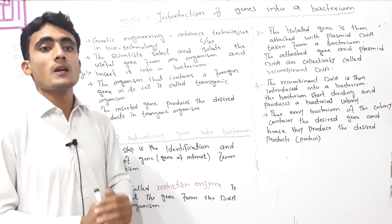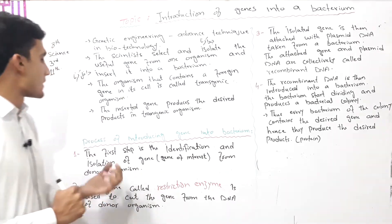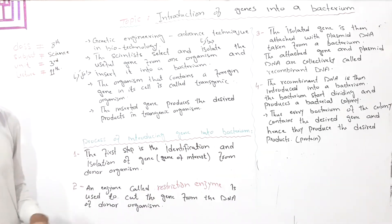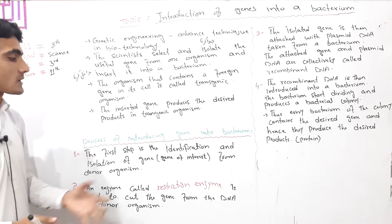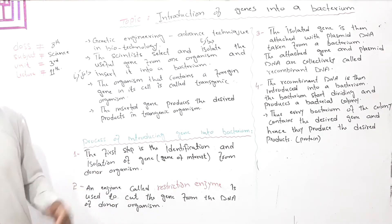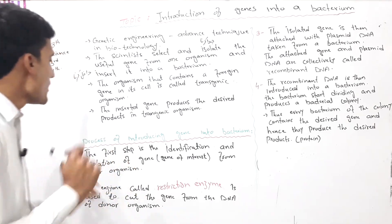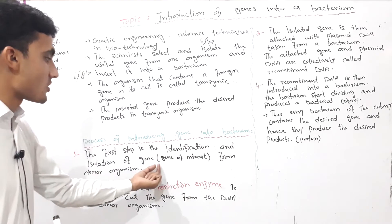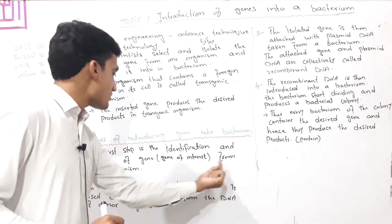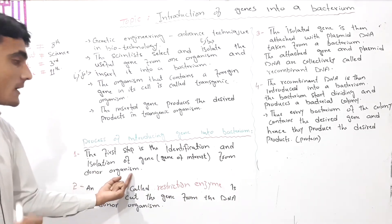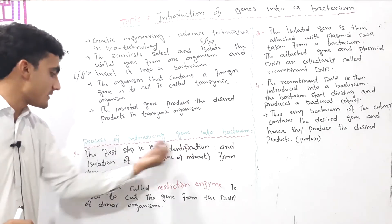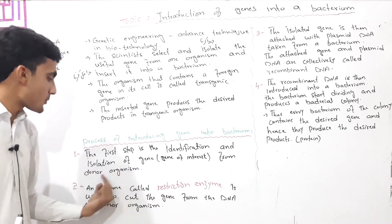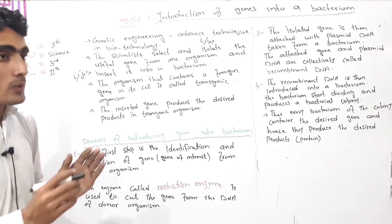The process of introducing a gene into a bacterium involves several steps. The first step is the identification and isolation of the gene — the gene of interest — from the donor organism.